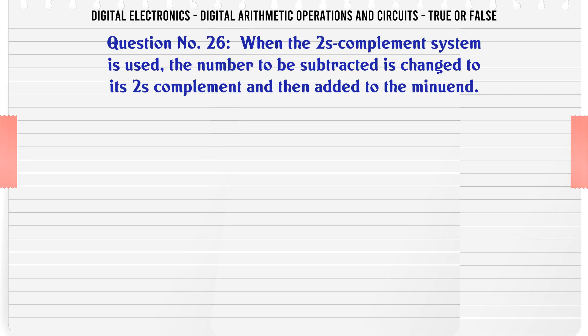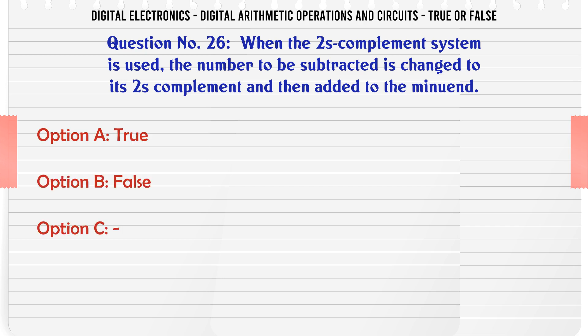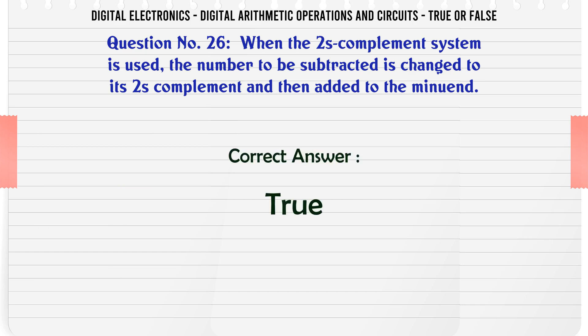When the 2's complement system is used, the number to be subtracted is changed to its 2's complement and then added to the minuend. True or False? The correct answer is True.